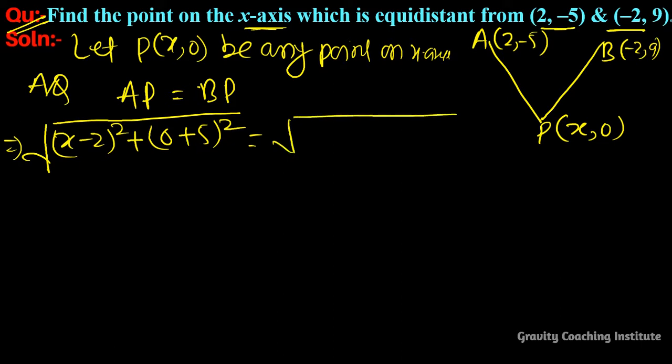And BP = √[(x-(-2))² + (0-9)²] = √[(x+2)² + (-9)²]